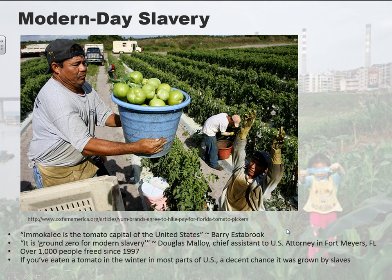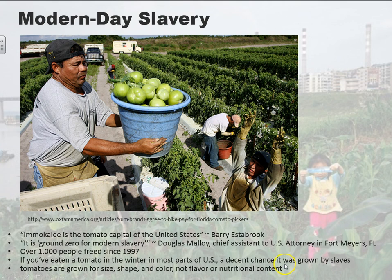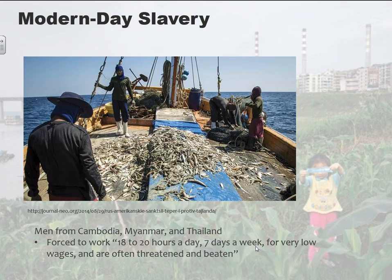I'm not going to tell you how or what to eat, but it is important to understand the implications of what you're doing. The tomatoes in the U.S. are grown for size, shape, and color — bred and grown to be a certain size, shape, and color to make them attractive. That's the tomato slave trade, basically.